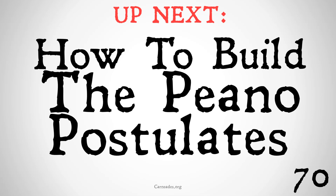Up next, we're going to be looking at how to build the Peano postulates. Now that we have talked about what these five postulates are, we're going to go through the logically rigorous process of defining their concepts and then proving the postulates themselves. You can always just take the postulates as assumptions and build math up from there, but what we're trying to do here is take the axioms and assumptions we already have in set theory and prove, with a couple of definitions, that the Peano postulates will hold — to show that all of our proofs in mathematics can be reduced to set theory and to logic.